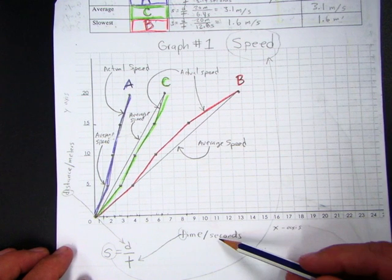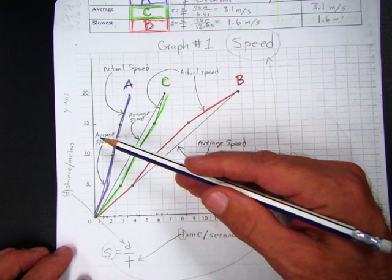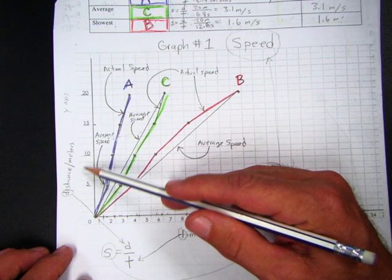If you look down here at the x axis, it's time in seconds. And if you look over here on the y axis, it's distance in meters.